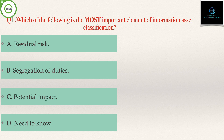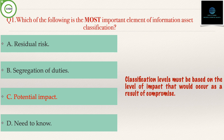The correct answer is option C, that is potential impact, because the classification level must be based on the level of impact that would occur as a result of compromise. Option A, residual risk, is incorrect because residual risk is unrelated to asset classification.